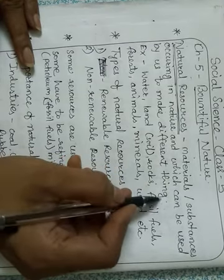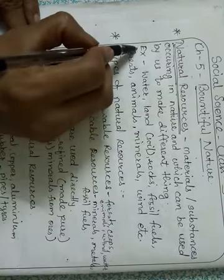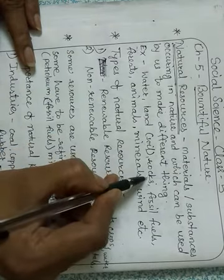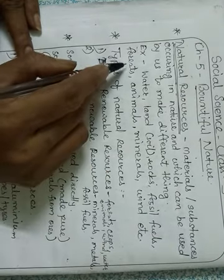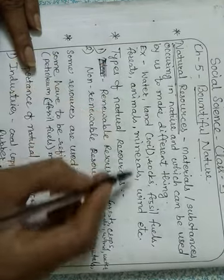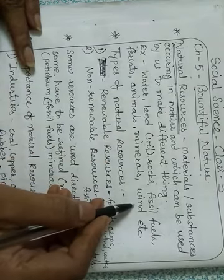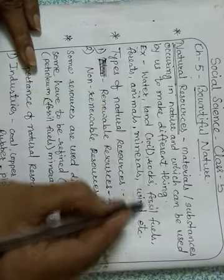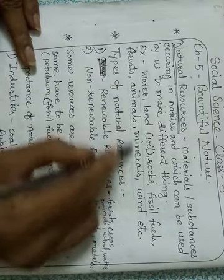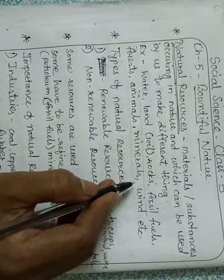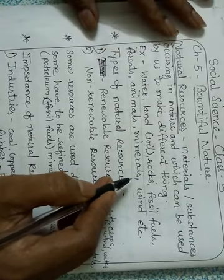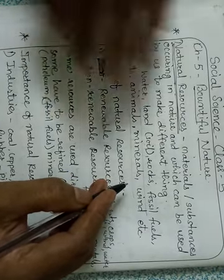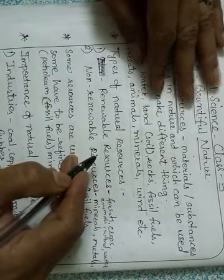Natural resources include water, land (that is soil), crops, fossil fuels, forests, animals, minerals, wind, sunlight, and so on. These are all natural resources and we are using all of them in one way or another. Mankind requires these natural resources for survival.